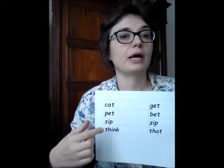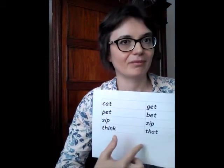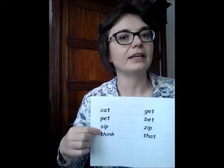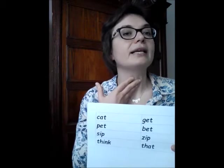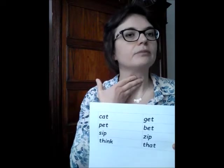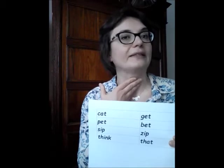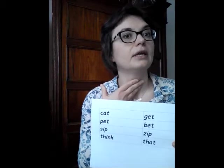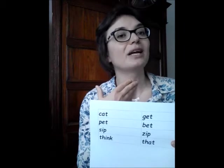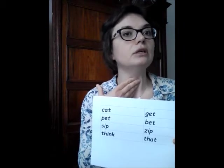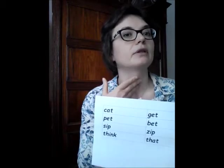If we try to pronounce the consonants we have here and place our fingers on our throat, we might notice that while producing, for example, the /s/ sound, the vocal folds are not vibrating. Whereas, while producing the /z/ sound, they are vibrating. The same happens with /f/ and /v/.